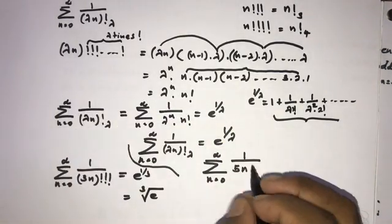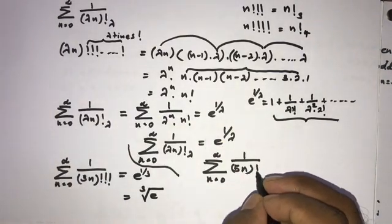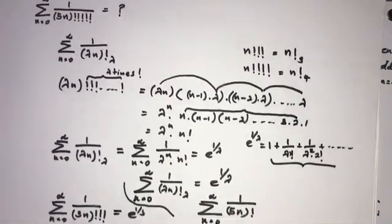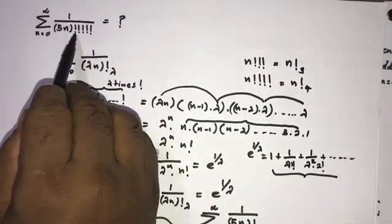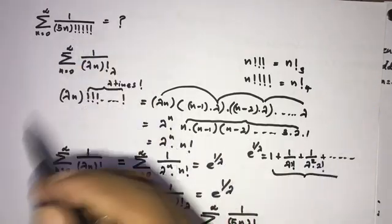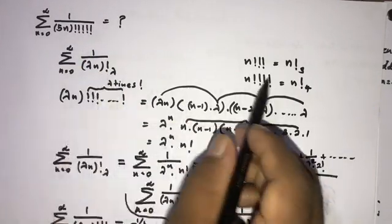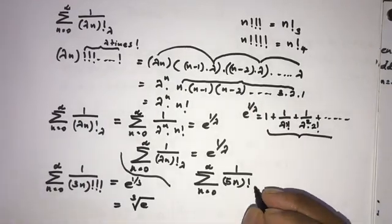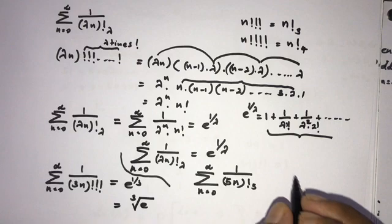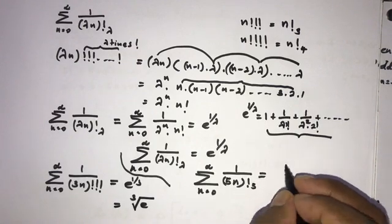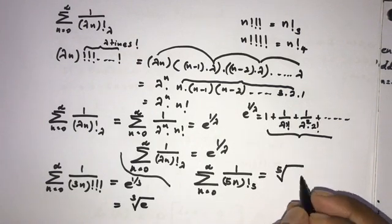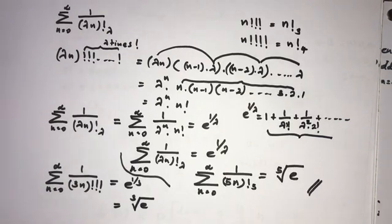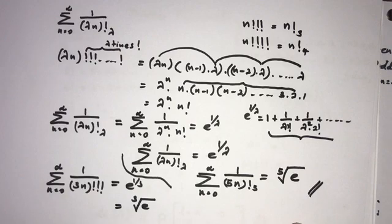Now applying this to our original question: the sum from n equals 0 to infinity of 1 over (5n)!⁽⁵⁾ equals e^(1/5), which is the fifth root of e. That is the answer. If you like this video, please subscribe to this channel. Thank you for watching.